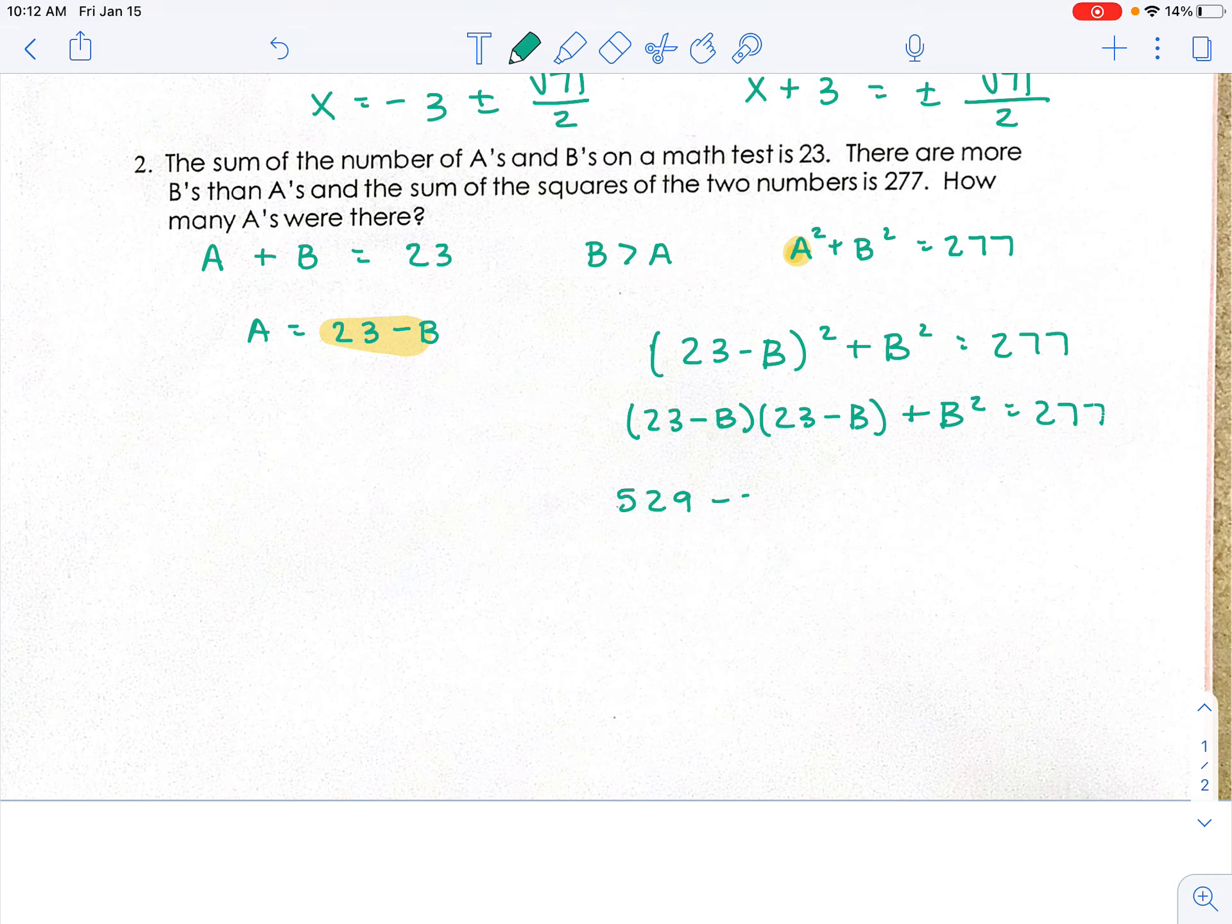(23 - B)² = 277. So I've got 2B² - 46B + 529 = 277.